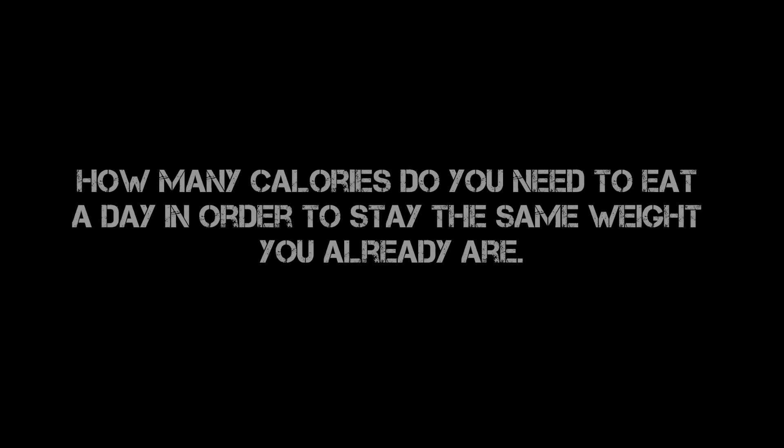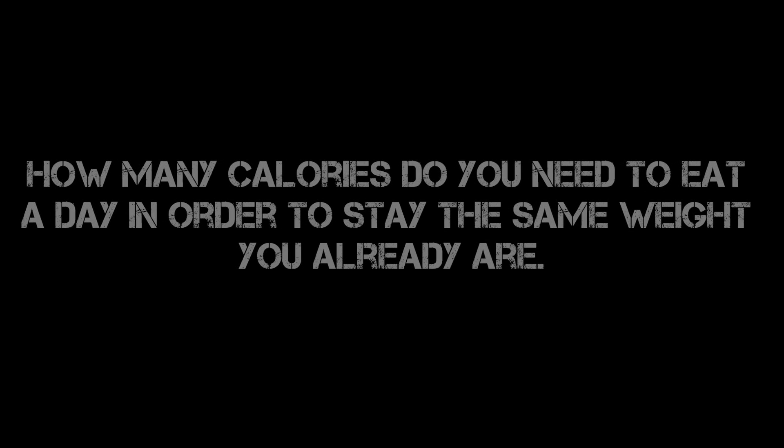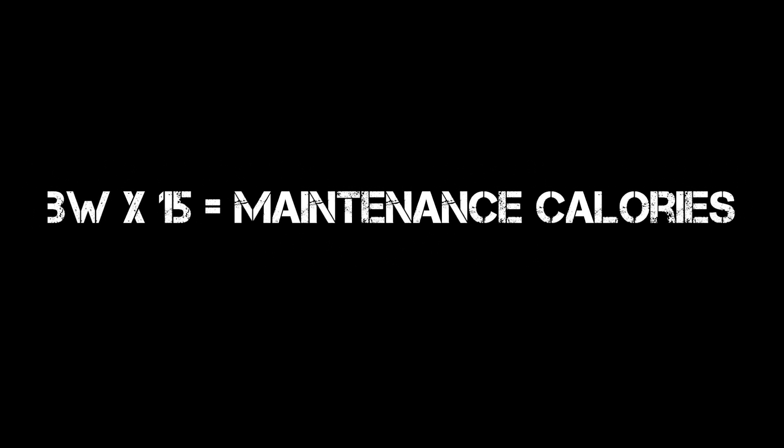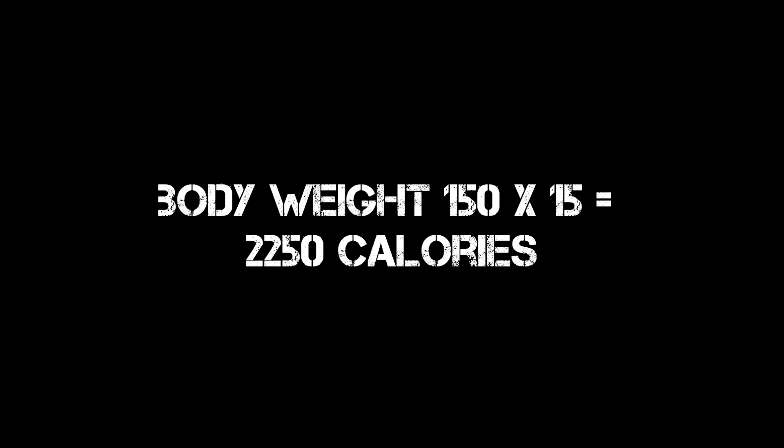First, we need to find your maintenance calories — meaning how many calories do you need to eat a day in order to stay the exact same weight that you are. That's a very easy equation. All you need to do is take your body weight and multiply it by 15. For example, if someone weighs 150 pounds and they multiply that by 15, that gives you 2,250. So you would need to eat 2,250 calories in order to stay the same weight of 150 pounds.